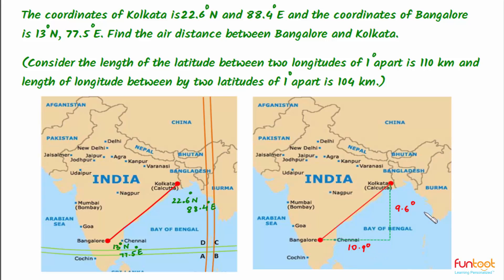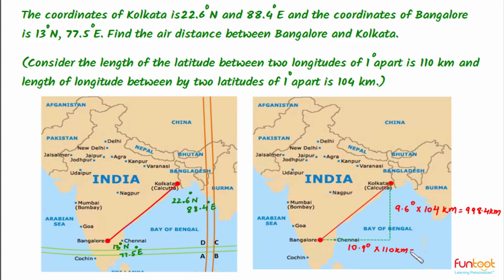Now let's convert the degrees into kilometers. As discussed in the question, the difference in the latitudes — 9.6 degrees — gets multiplied with 104 kilometers, and the difference in the longitudes — 10.9 degrees — gets multiplied with 110 kilometers, giving approximately 1199 kilometers.